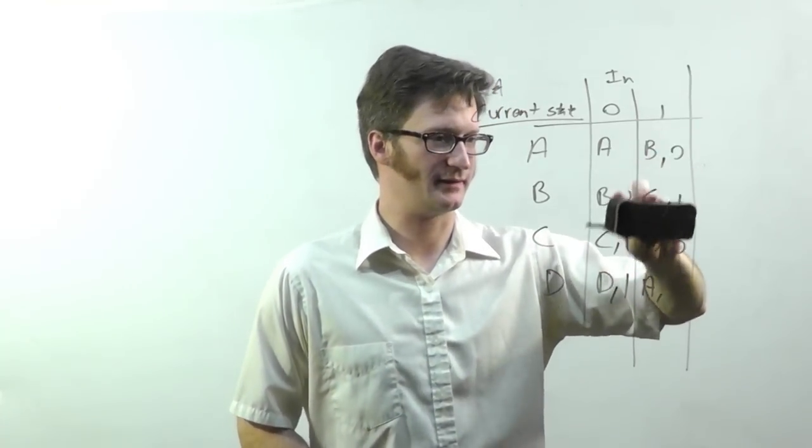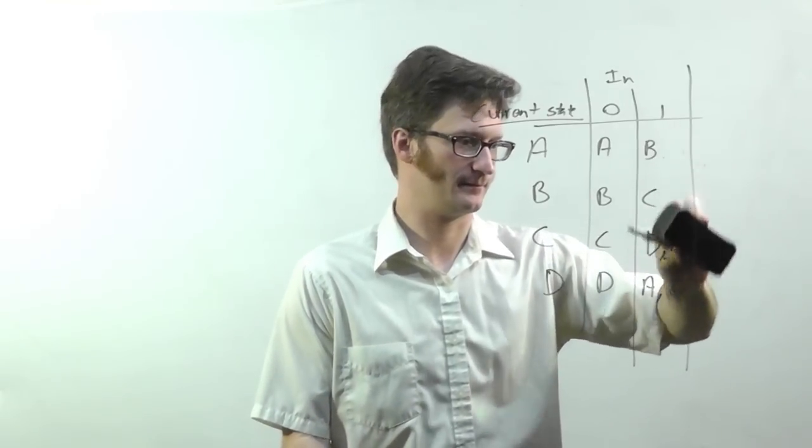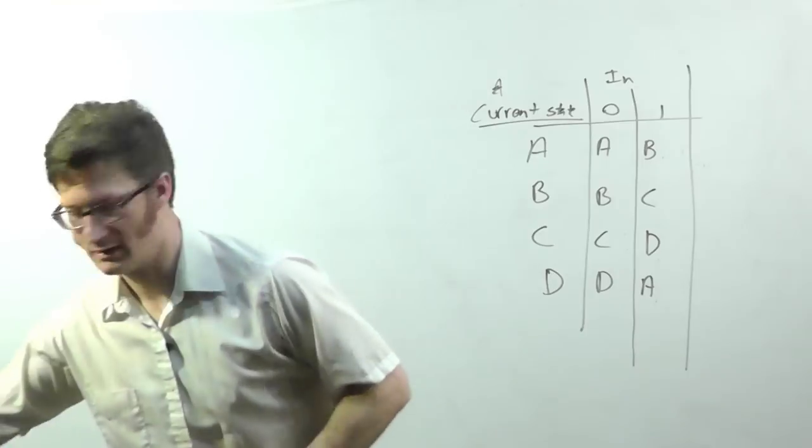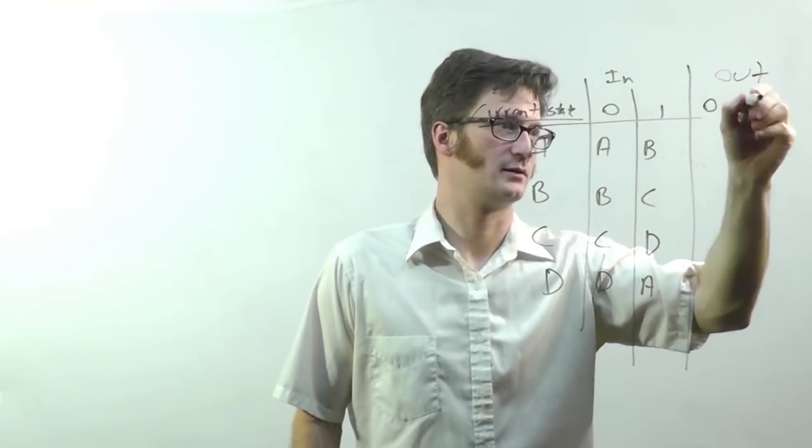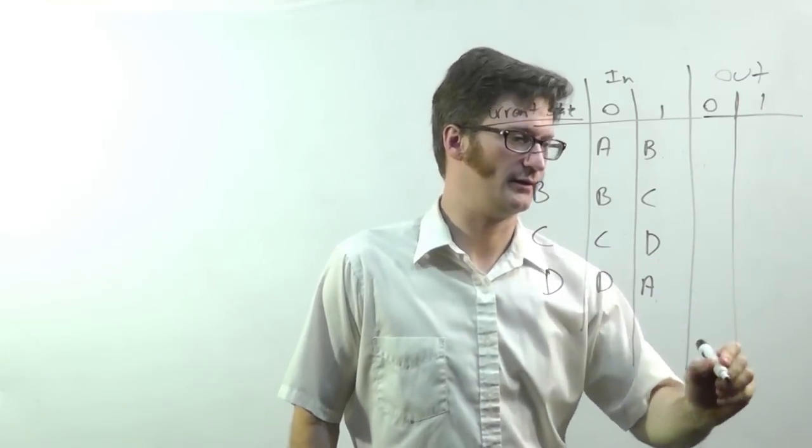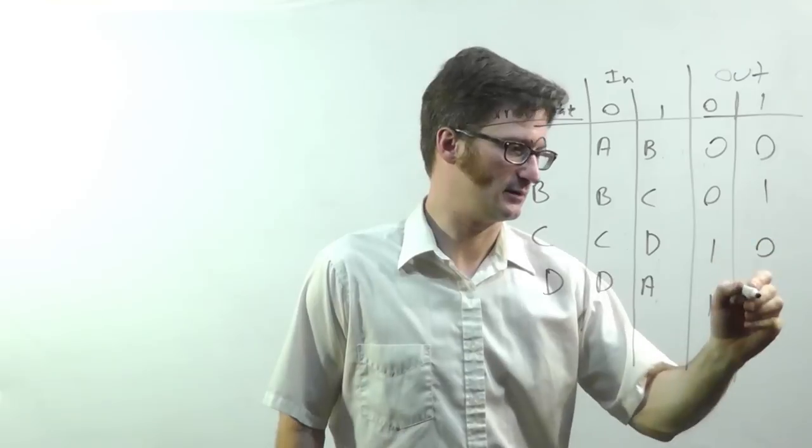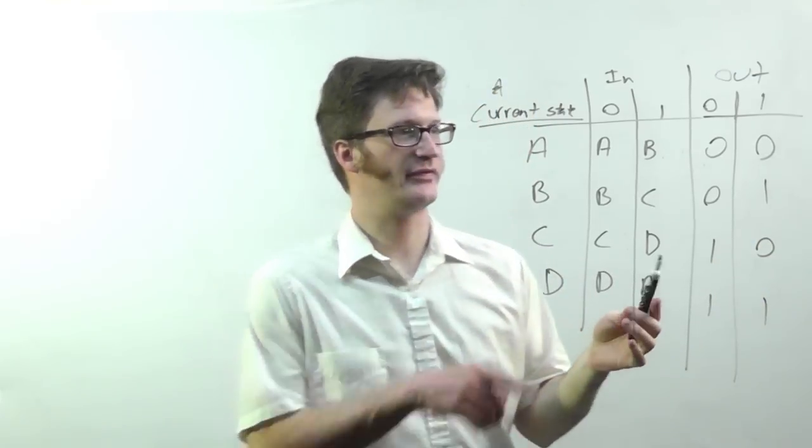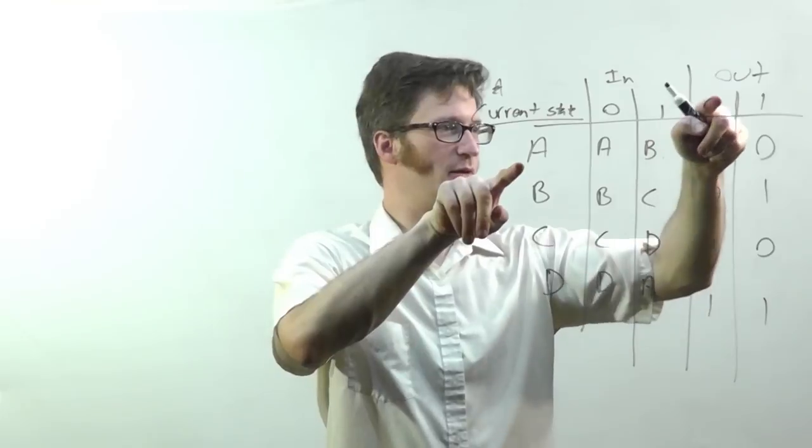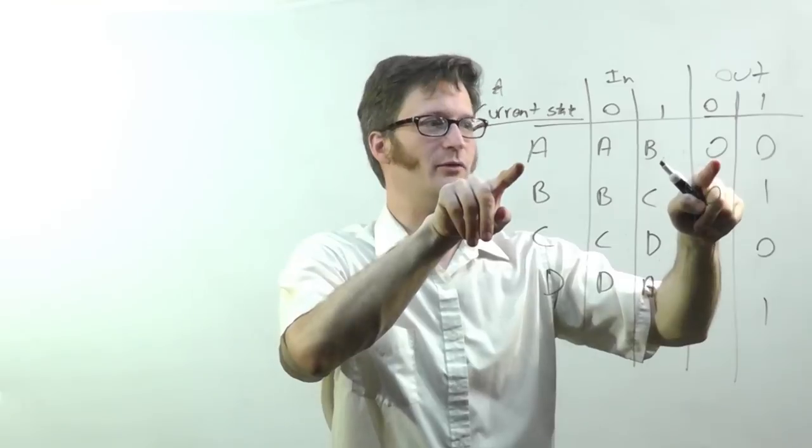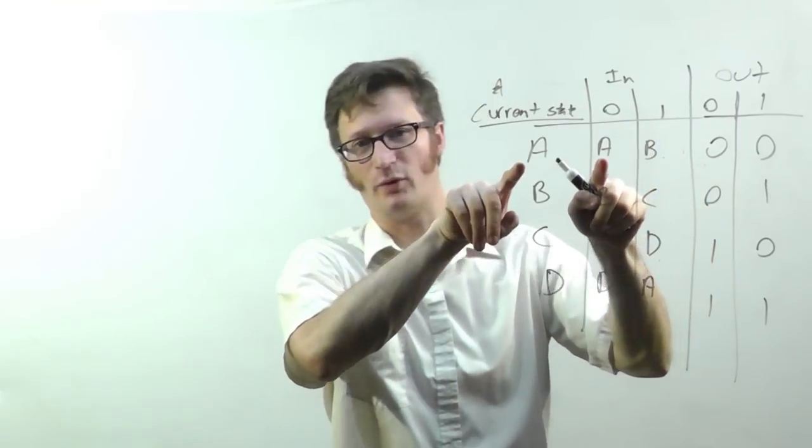Another way of drawing this, there's two common ways, is drawing your output in separate columns. So I might have zero, zero, one, one. So this is saying, if my current state is A and my input is zero, then my output will be zero. And if my input is zero, the next state will be A.